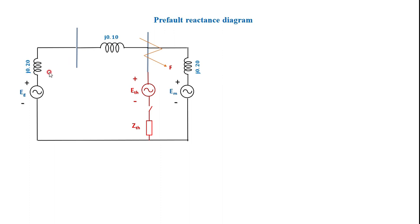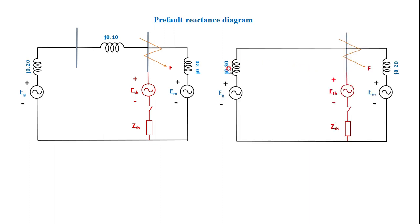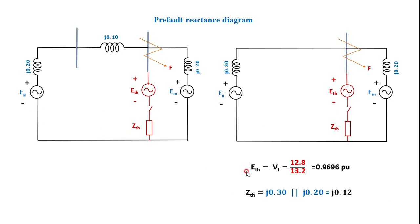For the Thevenin equivalent impedance: the generator reactance 0.20 and line reactance 0.10 are in series, giving j0.30, which is then in parallel with the motor reactance j0.20. The voltage sources are short-circuited when calculating Thevenin impedance seen from the fault point. Therefore, j0.30 parallel with j0.20 gives a Thevenin equivalent reactance of j0.12.